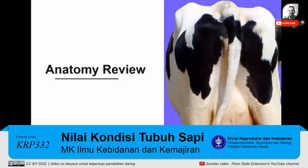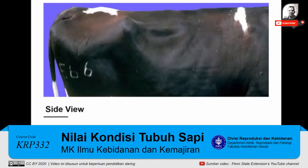Before we learn the scoring process, let's review the anatomical areas that are evaluated when assigning body condition scores. For dairy cows, we focus on the pelvic area and the loin. When viewed from the side, we will evaluate the visibility of the hooks, the pins, the thurl, and the short ribs.